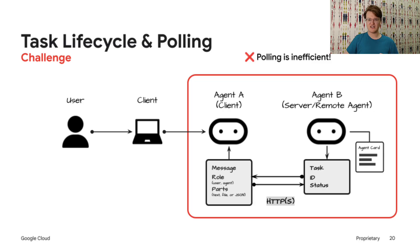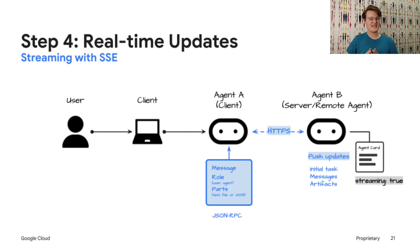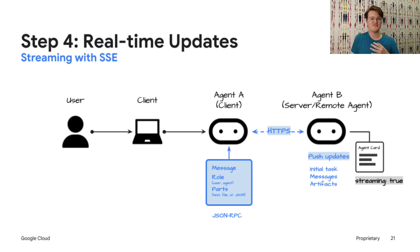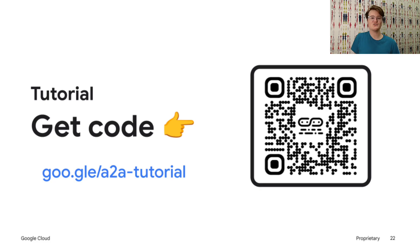Now, polling can work, but it's not very efficient if you want quick updates. For that, A2A supports streaming using server-sent events, or SSE. If Agent B's agent card says it supports streaming, Agent A can use the message stream method — the HTTP connection stays open and Agent B can push updates to Agent A as they happen. These updates can be the initial task object, task status update events (messages like 'I'm now working on this specific part' or 'the task is now complete'), and task artifact update events. If the result is large, like a long summary, Agent B can stream it in chunks. This is much better for user experience — think of live progress updates or seeing a document appear as it's being generated. You can find an in-depth tutorial with sample agents showing how this implementation works at goo.gl/a2a-tutorial.